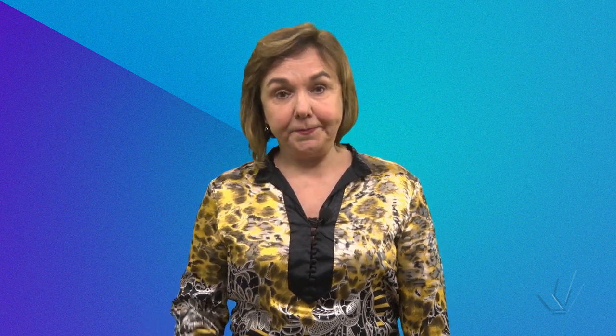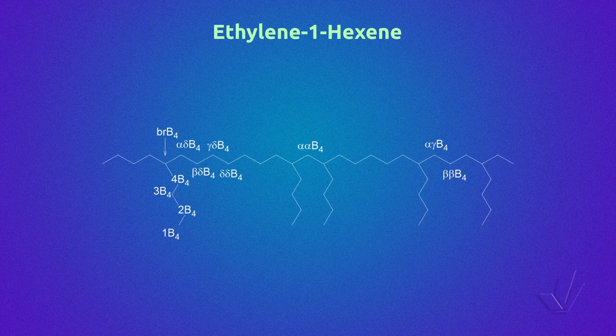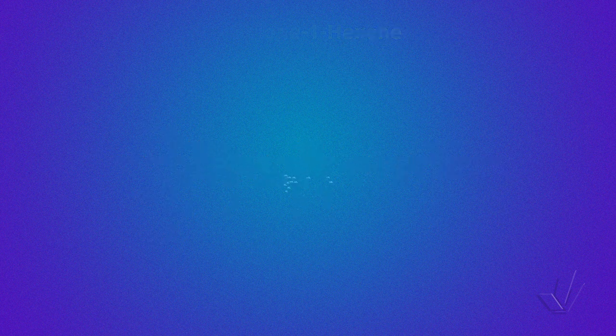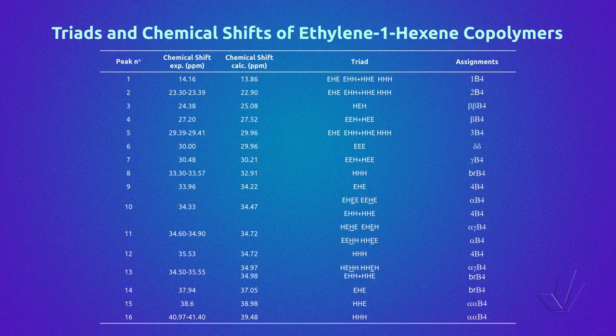Let's see an ethylene-1-hexene copolymer. This copolymer has in the main chain ethylene units and some butyl branches, as we can see in the figure, with the corresponding nomenclature for each carbon, as we have seen in the previous classes. Here we have a table with all the possible peaks from 1 to 16. In the second column, we have the experimental chemical shift in ppm, obtained directly from the spectra.